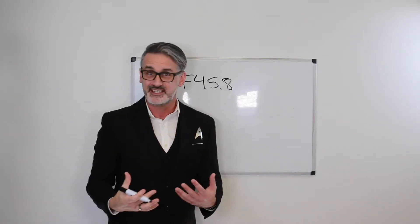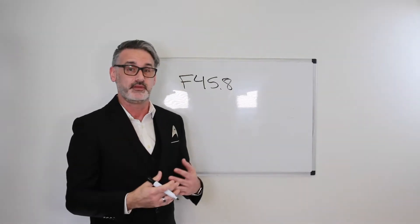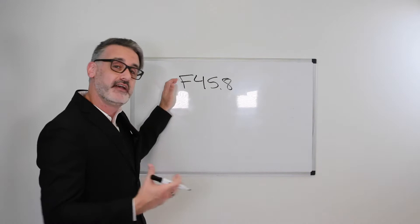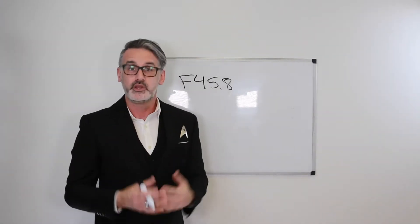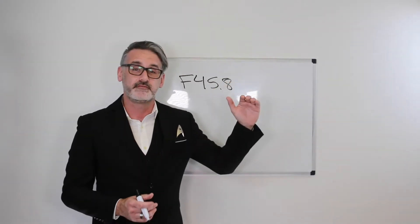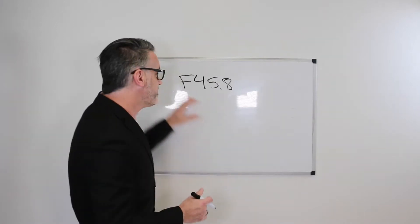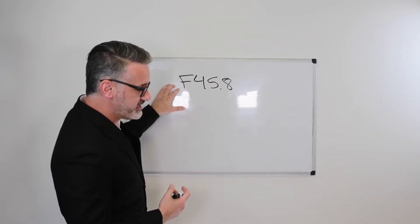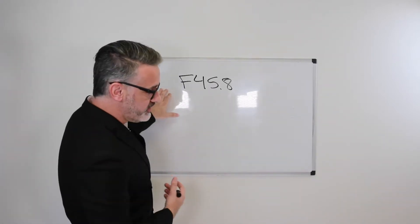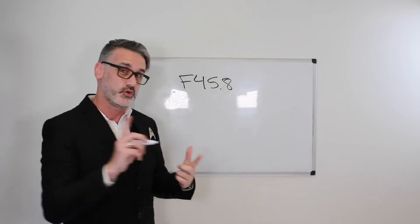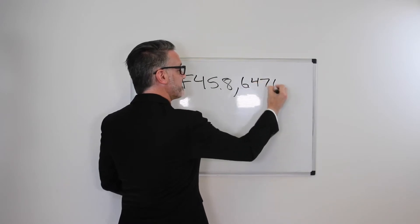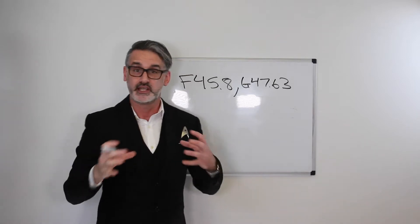So F45.8, other somatoform disorders — this is an NEC code, not elsewhere classified. In this example, we know what type of somatoform disorder the patient has, but it's none of the code options listed above F45.8. When we look under that code description, we have six examples listed, all the way from cyclic adenicus nephoria to teeth grinding. But there under F45.8, there's the Excludes 1 rule, which excludes sleep-related teeth grinding, G47.63.